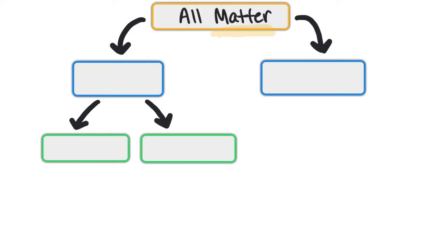But matter can be further broken down into smaller categories. Our first two categories that matter can be broken down into are pure substances and mixtures. Matter can either be a pure substance or a mixture.